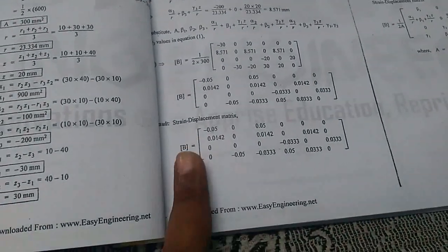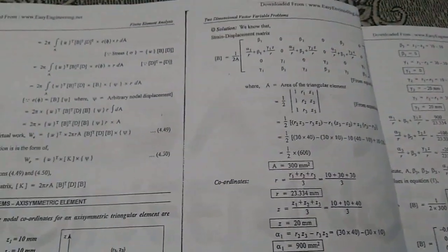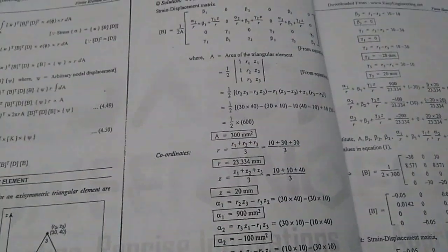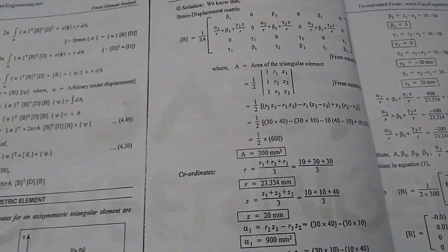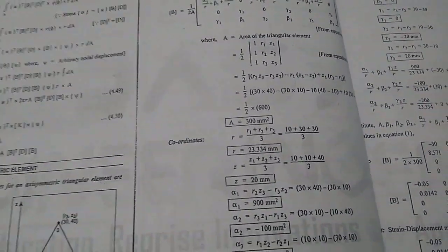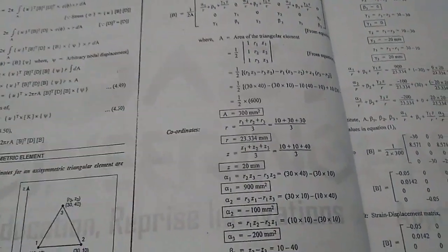We can substitute the values into the formula for beta. Step by step, we substitute for this formula. The answer can be verified — formula correct, steps accurate.